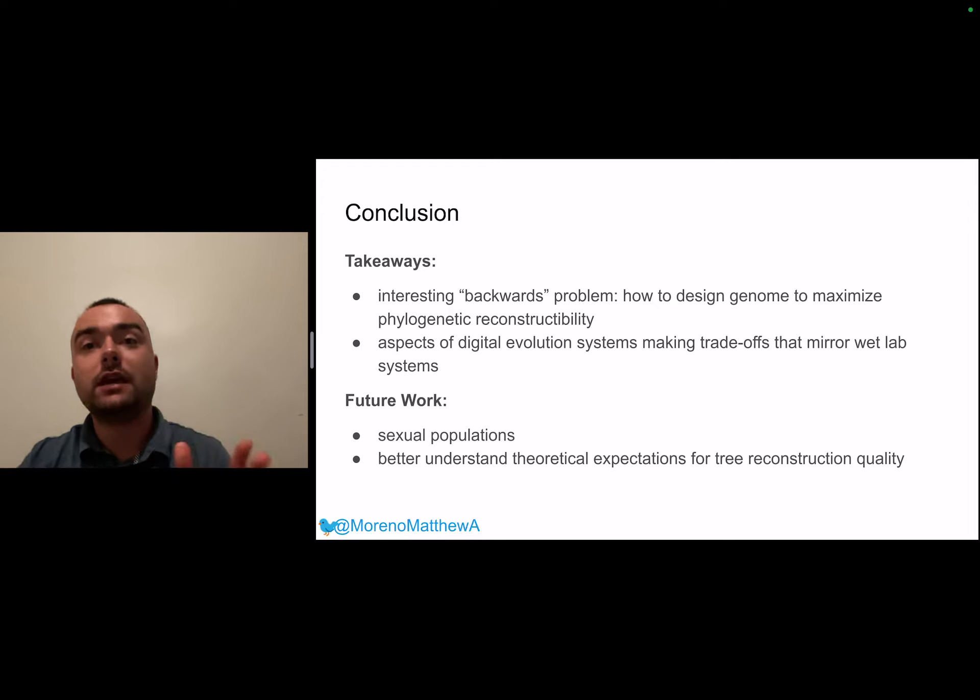I want to take a moment to really highlight the high level takeaways that I hope that you'll be leaving this presentation with. The first being this interesting backwards problem that we're running into in digital evolution systems where in natural systems you're stuck with the genomes that nature gave you and you have to do the best quality phylogenetic reconstructions you can with what you have, but in these digital evolution systems we are having this weird opportunity to try to design the genomes that we're actually doing the inference on in order to make inference as easy as possible. That raises a bunch of really interesting questions about what's useful for inference and maybe even theoretically what's the best quality inference that we can do given a certain amount of bits of information in the genome.